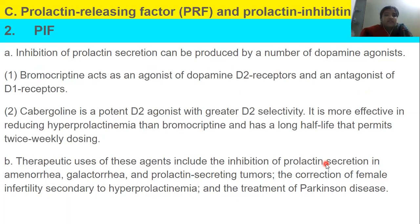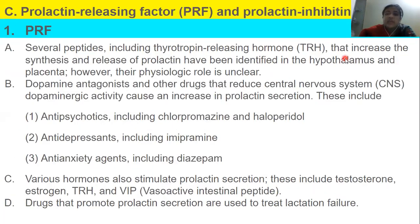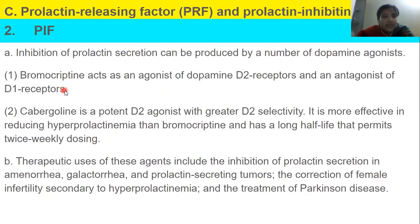Then we have prolactin inhibiting factor, PIF. Here we are diminishing prolactin release. Inhibition of prolactin secretion can be produced by a number of dopamine agonists — you can easily relate that since we used dopamine antagonists to enhance prolactin secretion, we use dopamine agonists to diminish it.